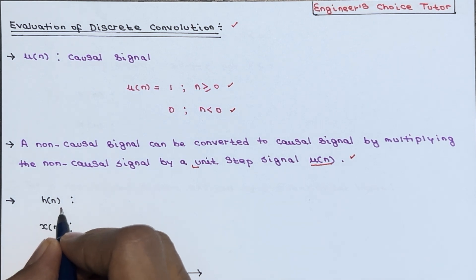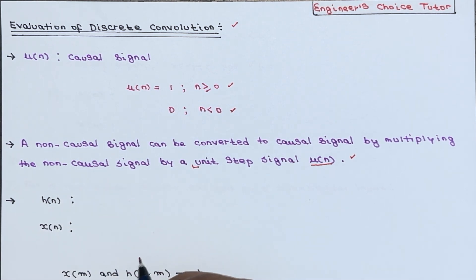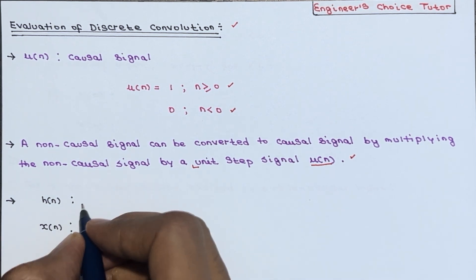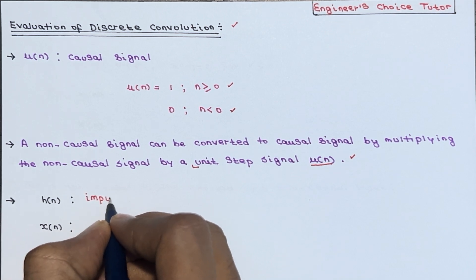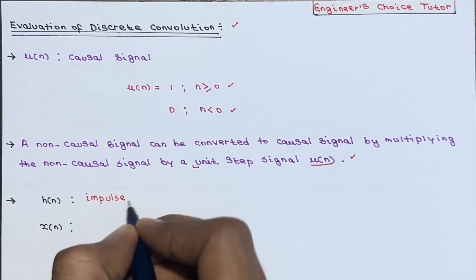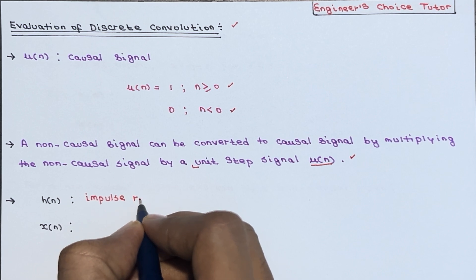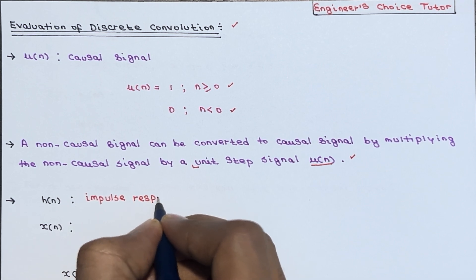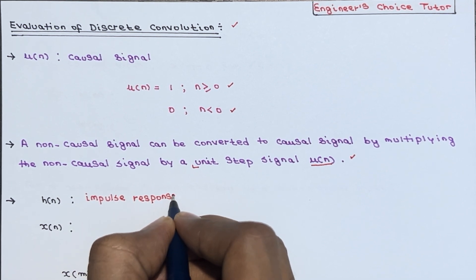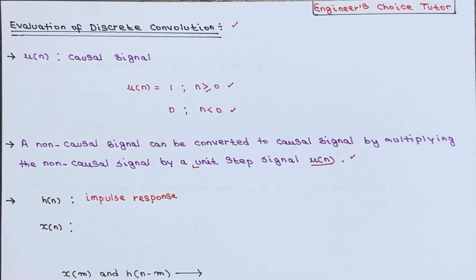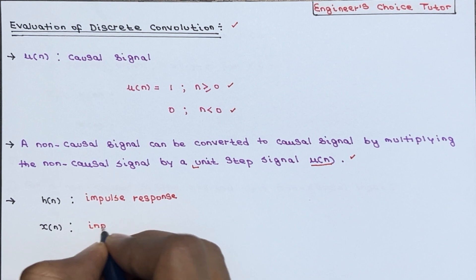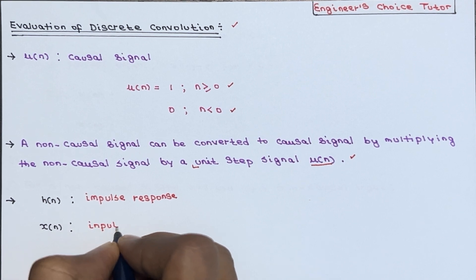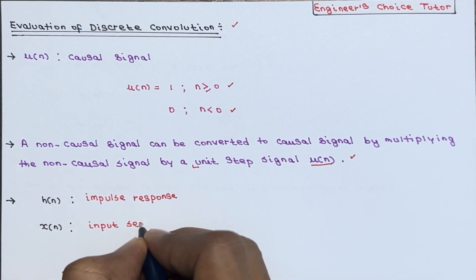h(n) is called the impulse response, and x(n) is the input sequence.